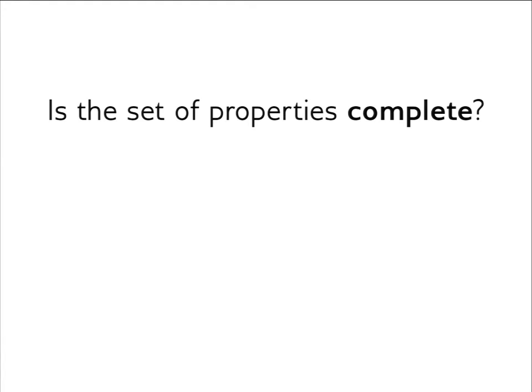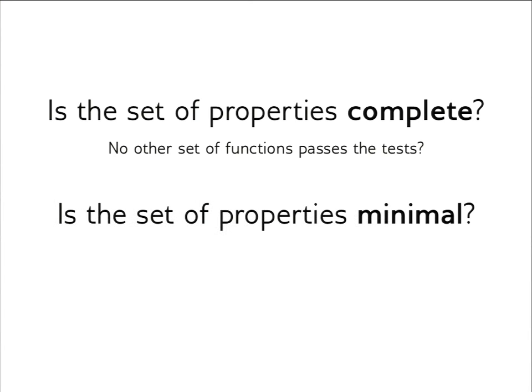Two questions remain unanswered. Is the set of properties complete? In other words, does no other set of functions pass the tests — how restrictive is our property set? Another question is: is this property set minimal? Is there a property that is redundant? Can I remove one property to speed up regression tests or make the test file easier to maintain?